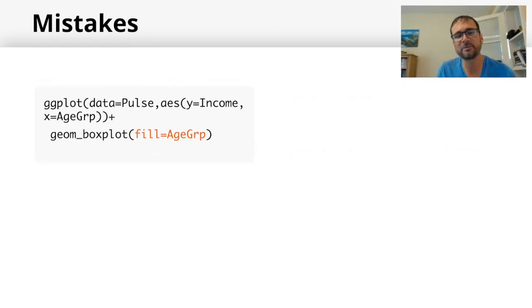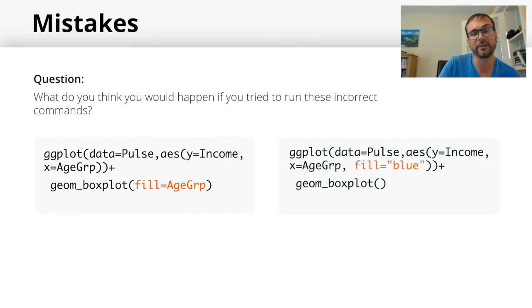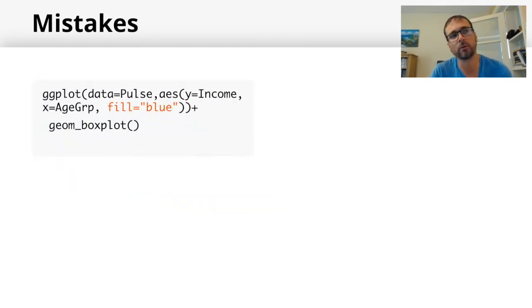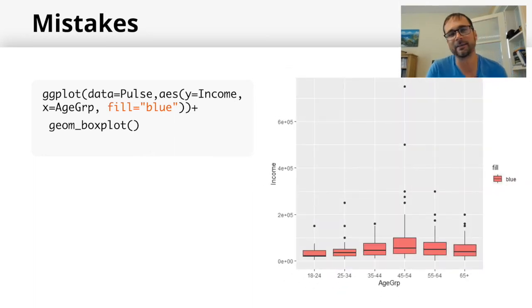The second option is more interesting. Some people say nothing will happen, others say it'll error, a smaller group think it'll work fine and fill it in blue. All three groups are wrong. This doesn't give an error, doesn't fill it in blue - it fills everything in red. The reason is you're mapping the fill aesthetic to a value. It's not recognizing blue as a color, just as a value. Because it's a static value with no variability, it's setting all the data to the same color - the first color in its default palette, which is red.